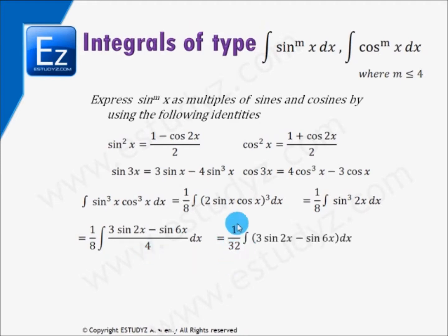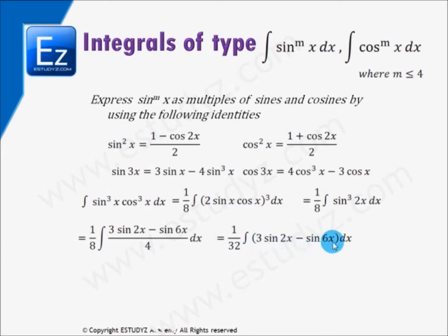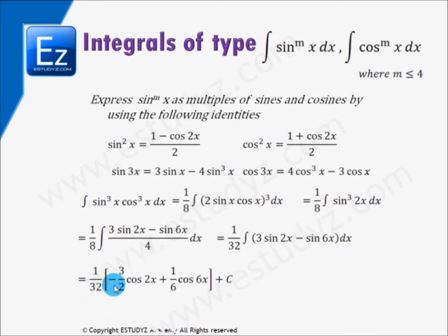The expression becomes (1/32) × integral of (3 sin 2x − sin 6x) dx, since 8 × 4 = 32. This evaluates to (1/32) × [−(3/2) cos 2x + (1/6) cos 6x] + c.